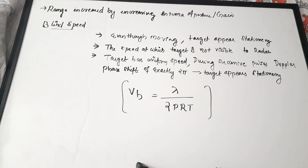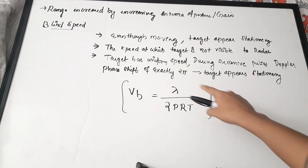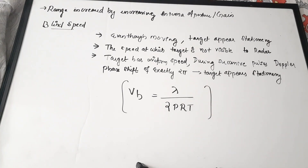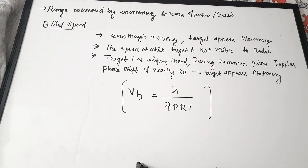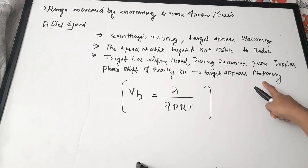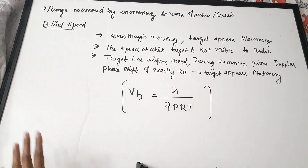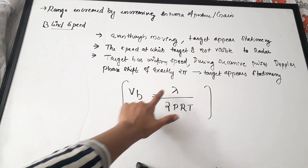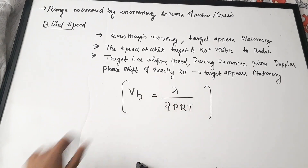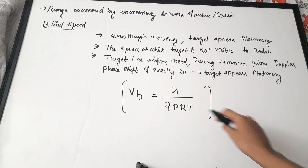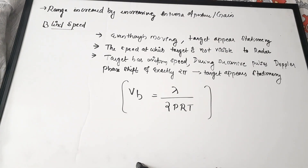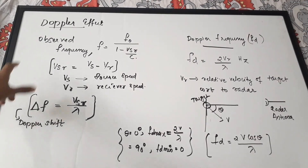Because the phase shift is 2π, the target may appear to be sending pulses from the same location, making it appear stationary even though it is moving at a uniform speed. This speed is called blind speed, and it is given by Vb equals λ divided by (2 × PRT), where λ is the wavelength and PRT is the pulse repetition time.